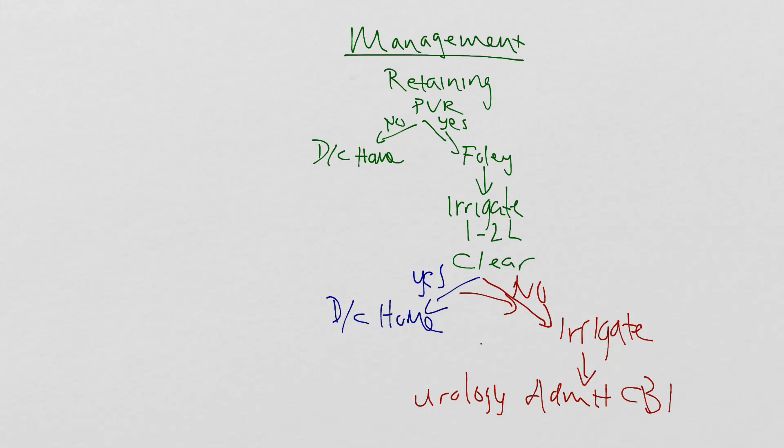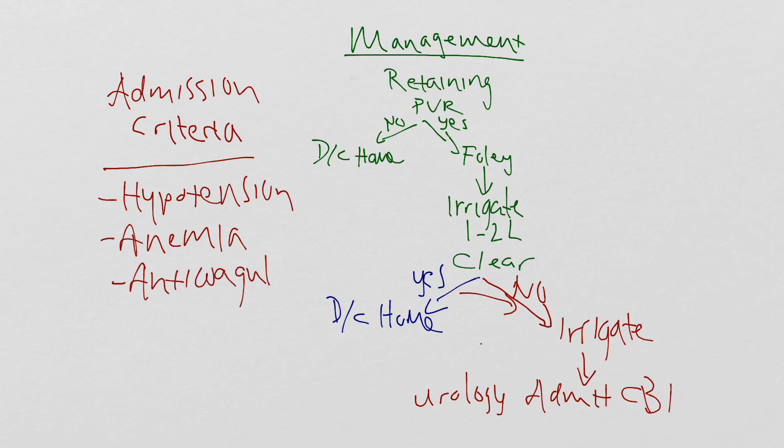In addition to the management strategy that we just discussed, we'll also want to just review what the admission criteria is for these patients. These criteria include things like hypotension, anemia, if the patient is anticoagulated, if the patient is thrombocytopenic, very old, and finally, if you can't irrigate to clear, just like we discussed in the management algorithm.